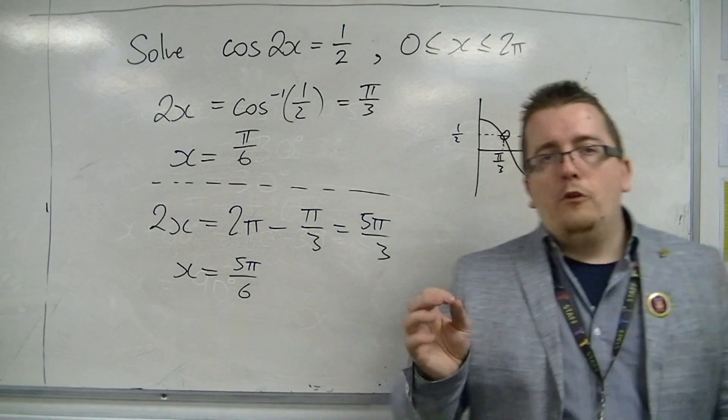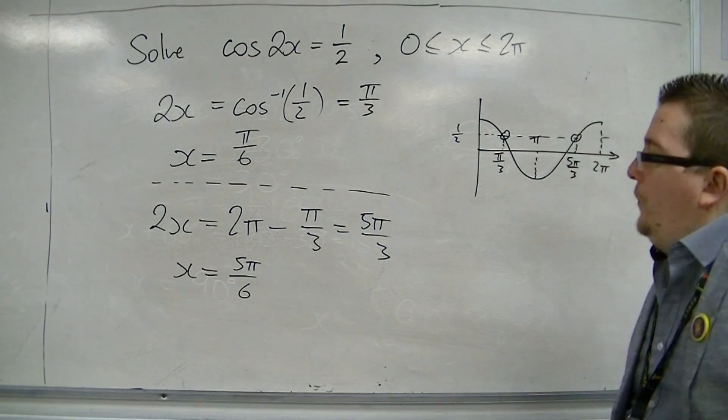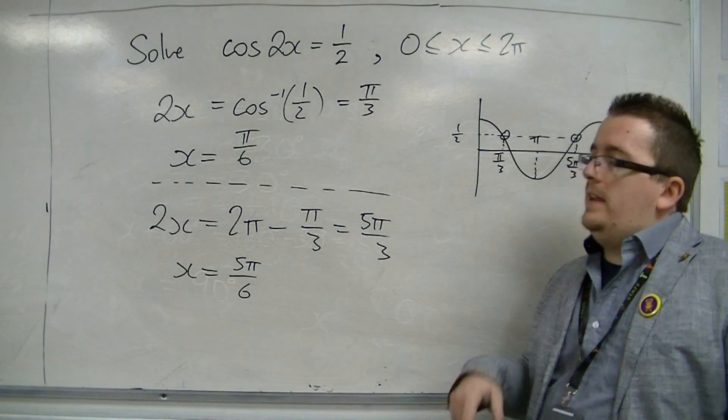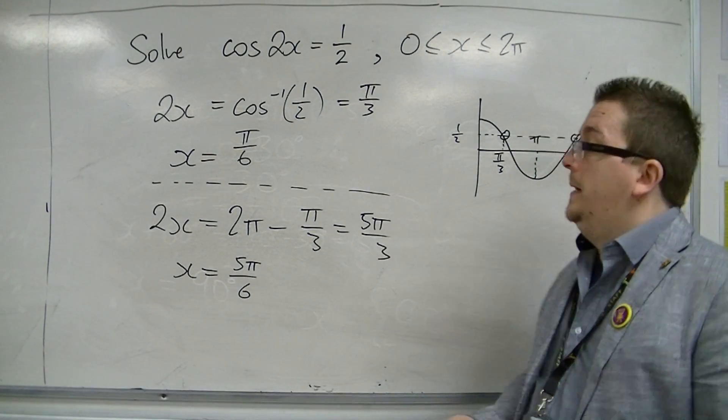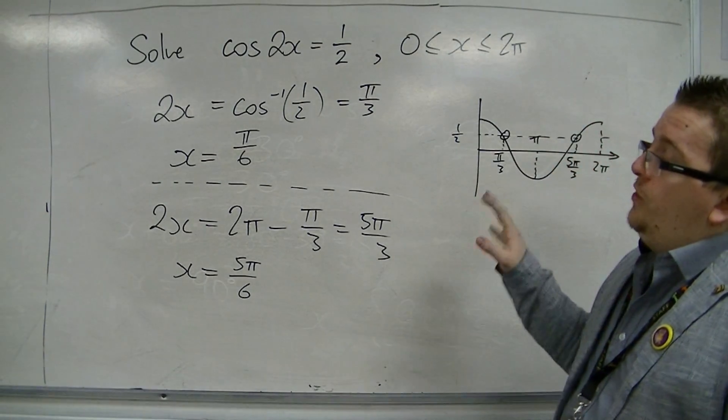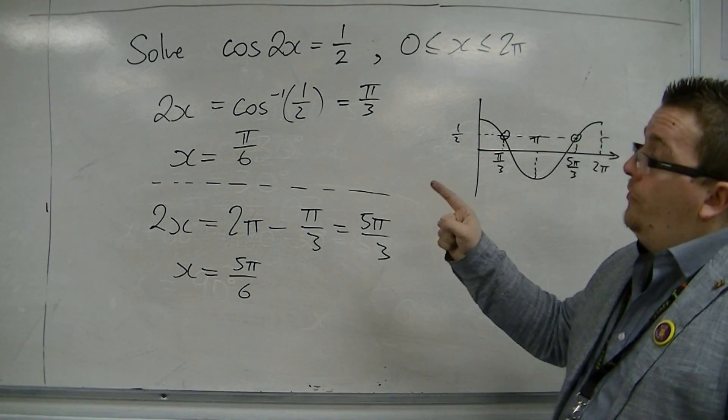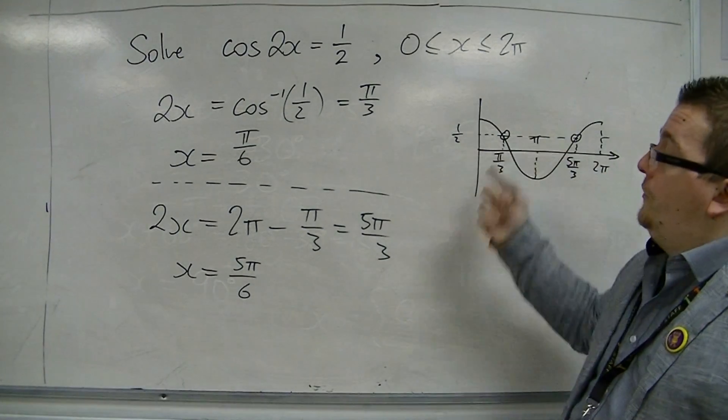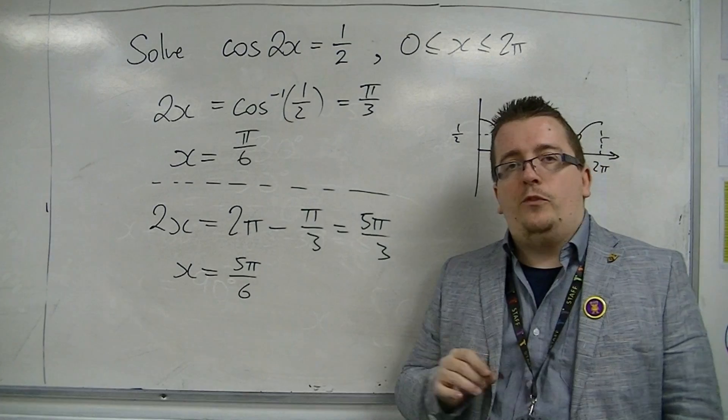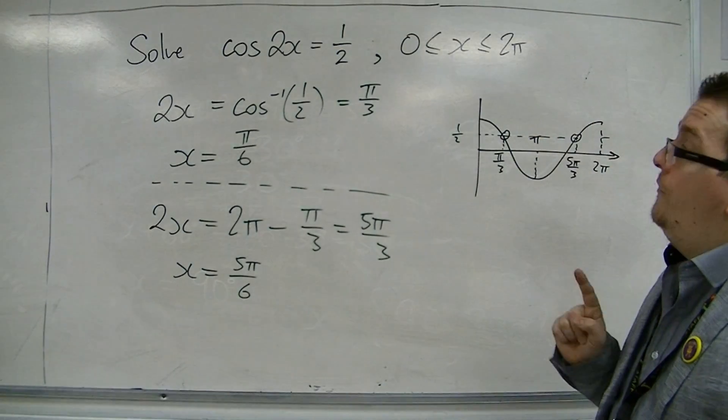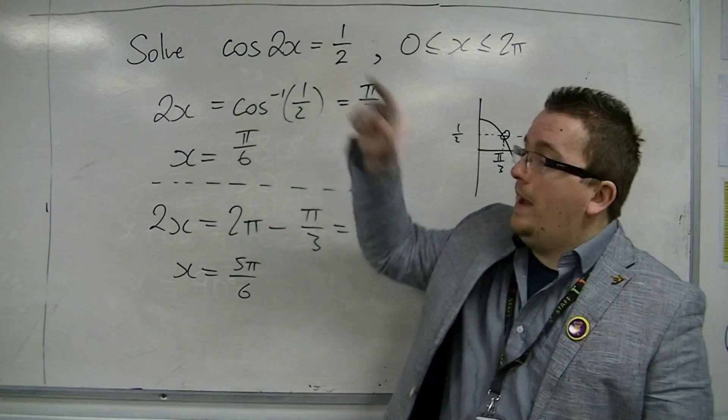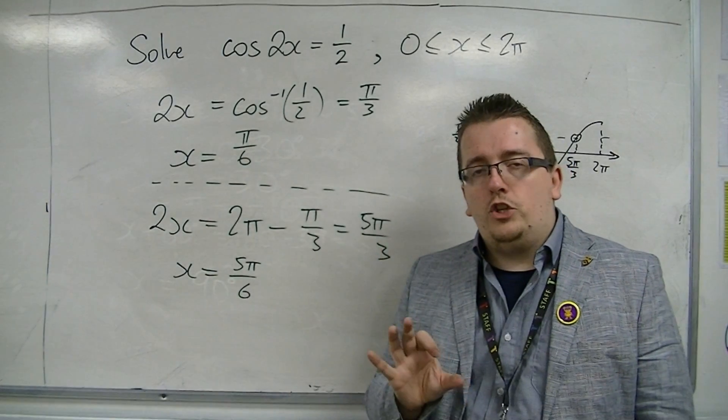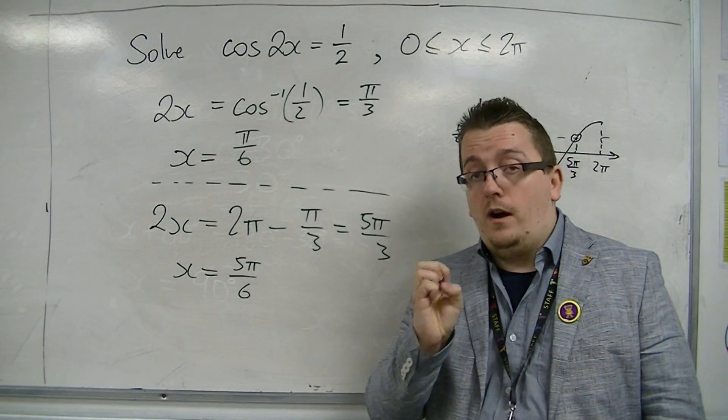Now, there is a problem, because although in the previous video when we were working with the sine curve, we had one solution that was out of range, both of these solutions are between 0 and 2 pi, so that seems fine. However, cos 2x is a stretch in the x direction by a factor of 1 half.